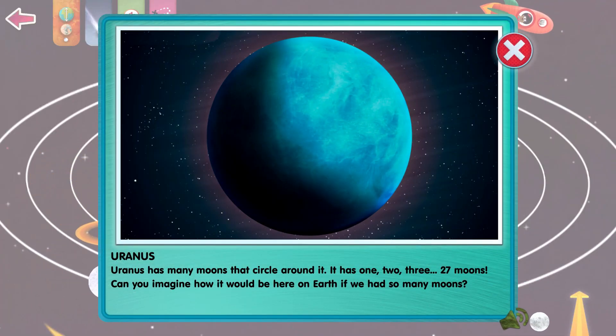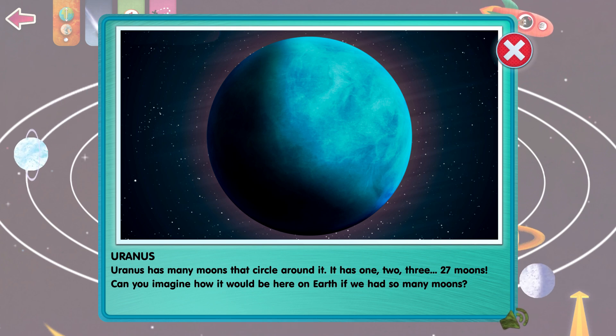Uranus has many moons that circle around it. It has one, two, three, 27 moons! Can you imagine how it would be here on Earth if we had so many moons?